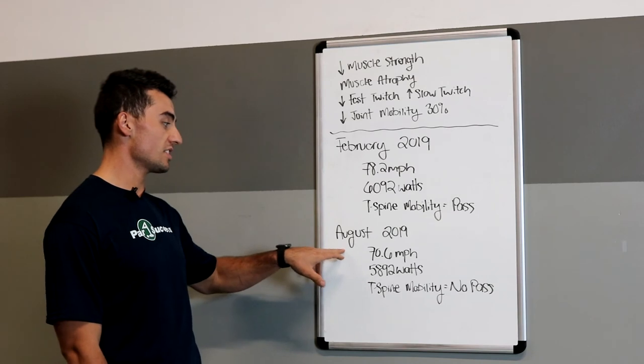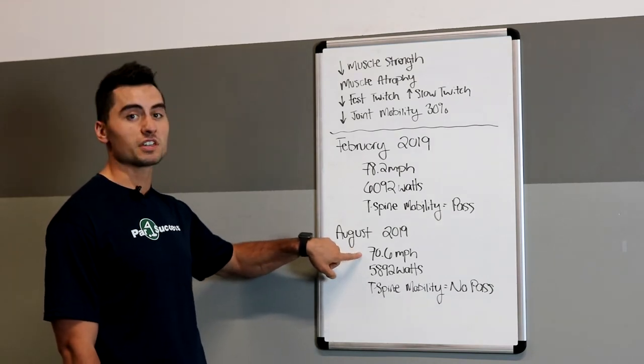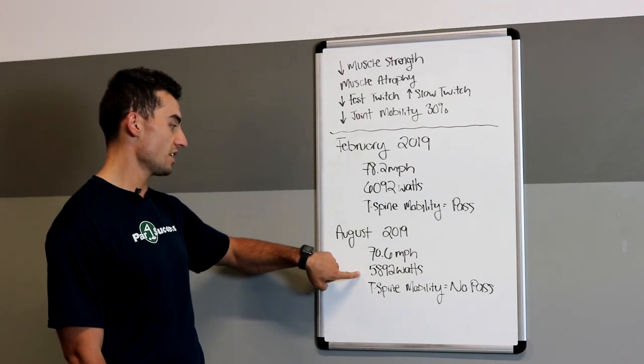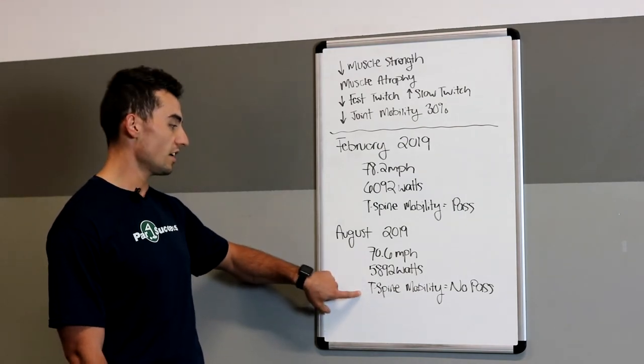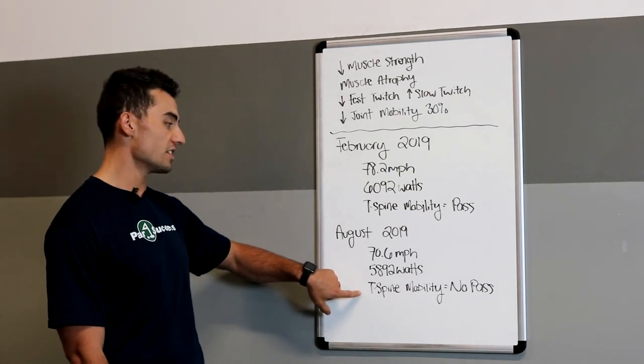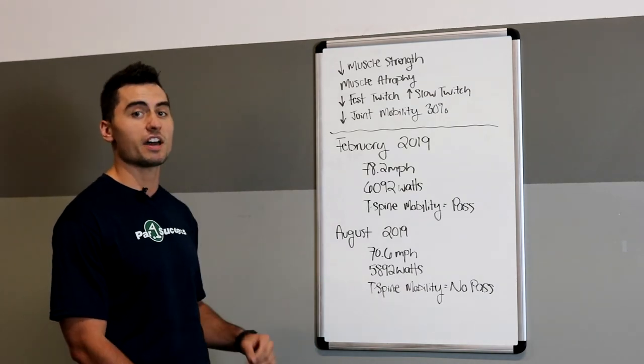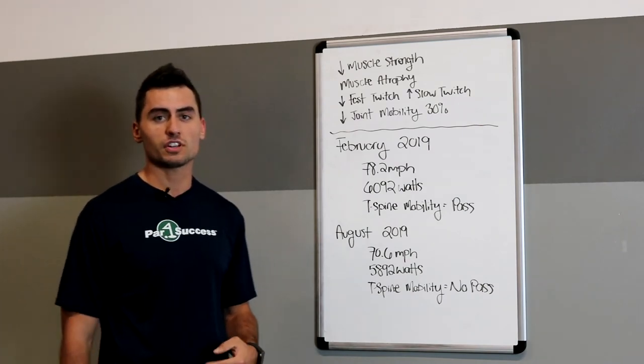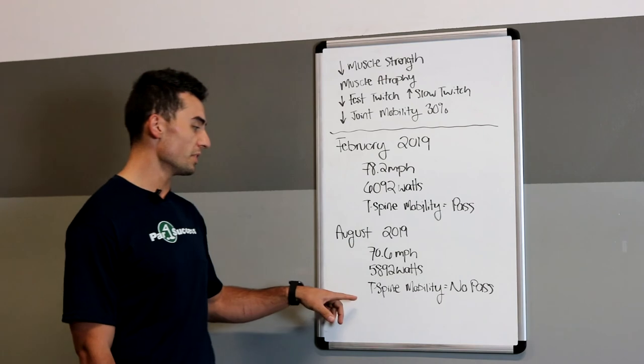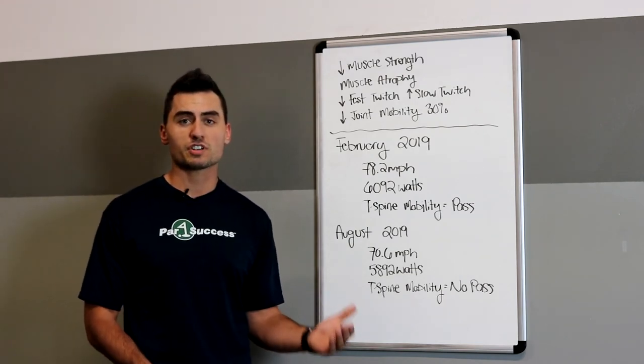She came back in August, tested again. She was then swinging 70.6 miles an hour. Her vertical peak power had dropped by over 200 watts and she was now failing the T-spine mobility test. She also had another handful of aches and pains here and there from not doing her mobility as well as not completing her strength training.